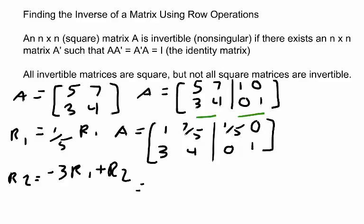This gives us a new matrix: 1, 7/5, 1/5, 0, 0, negative 1/5, negative 3/5, 1.